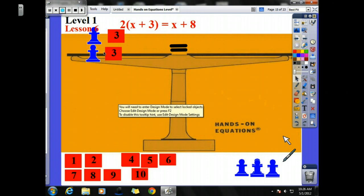So now I have 2 times x plus 3 twice. So I have two x's plus actually 6, 2x plus 6. And on the other side, I have an x and an 8.